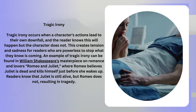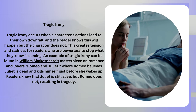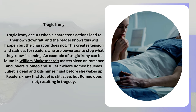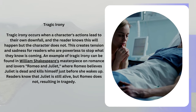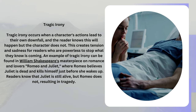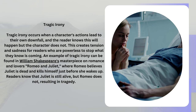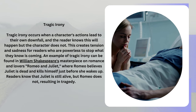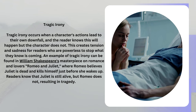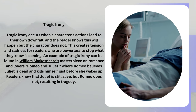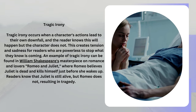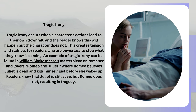Tragic irony occurs when a character's actions lead to their own downfall, and the reader knows this will happen but the character does not. This creates tension and sadness for readers who are powerless to stop what they know is coming. An example can be found in Romeo and Juliet, where Romeo believes Juliet is dead and kills himself just before she wakes up. Readers know that Juliet is still alive, but Romeo does not, resulting in tragedy.